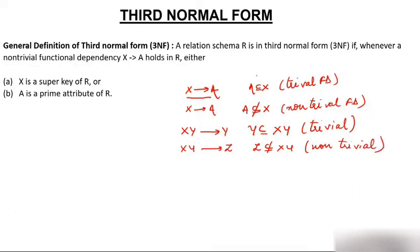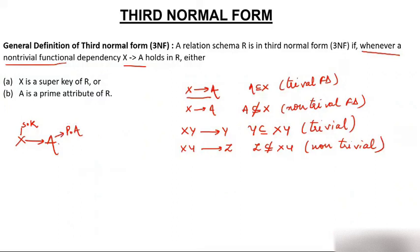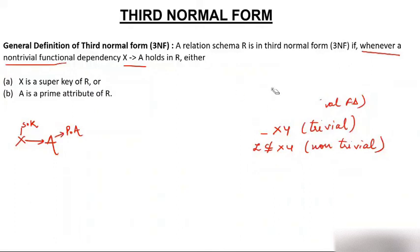So the general definition revolves around non-trivial functional dependencies. Whenever a non-trivial FD X→A holds, either X must be a super key, or A must be a prime attribute — meaning part of a candidate key. Let's see examples to understand this more clearly.